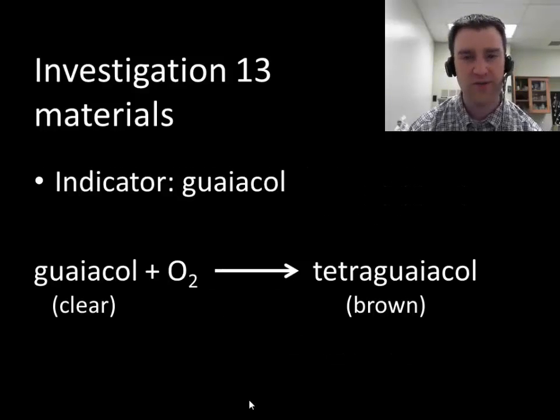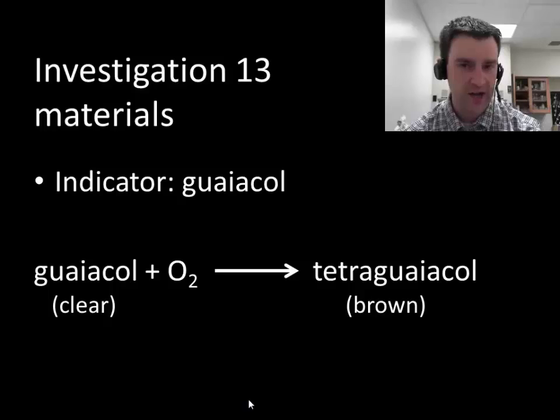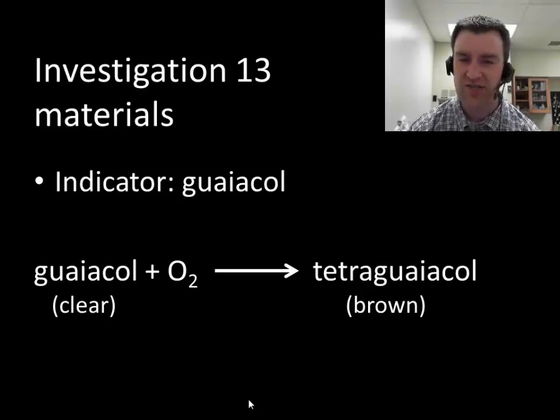How are we going to have a sense of the products that are being formed? We're also going to have a chemical called guaiacol in our test tubes. What guaiacol can do is itself bind to the oxygen that's being produced as hydrogen peroxide is being broken down. When guaiacol binds to oxygen, it forms another chemical called tetraguaiacol. What's important here is that it's changing color when it does that. So we can measure how much oxygen is being produced by observing the test tube itself and watching how brown the test tube becomes over time.